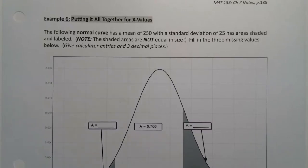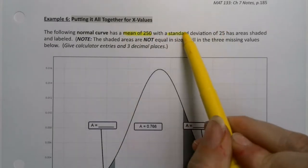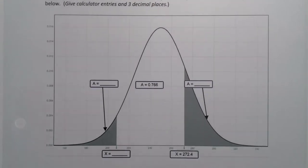Just as before, it'll be great for us to put together our knowledge of the normal curve into one problem that shows we really know what we're doing. So this is the normal curve that has a mean of 250 and a standard deviation of 25. And it has three areas shaded that are not equal in size.